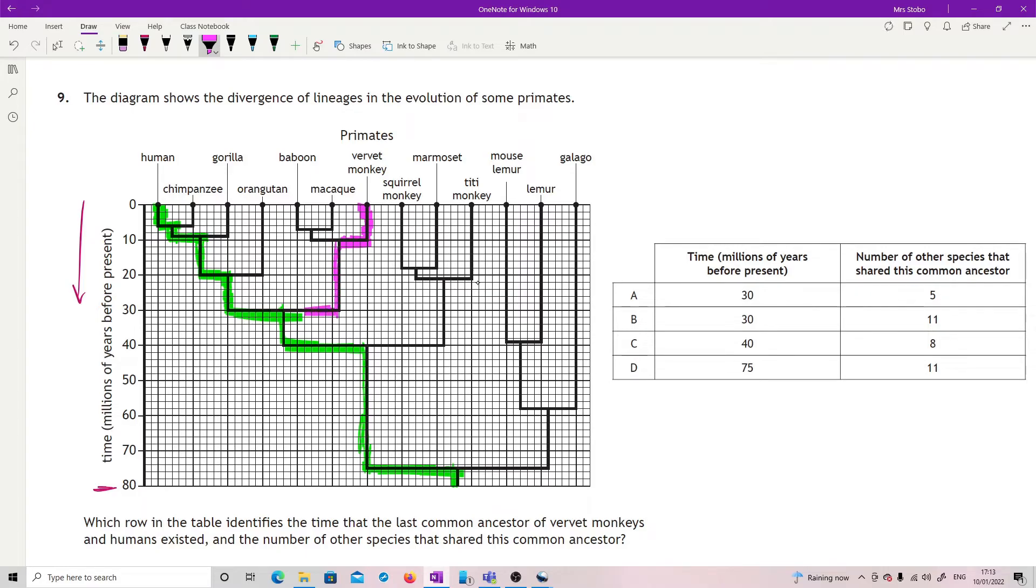So I then need to read that across. That last common ancestor for these two was at 30 million years ago. And then I'm looking for how many of them share that common ancestor, so I need the branching back up the way from 30. How many of these connect back to here? The chimpanzee does, the gorilla, the orangutan, the baboon, and the macaque: one, two, three, four, five. And correct answer is A.